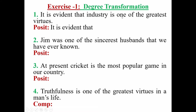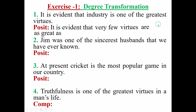Now we are going to transform: 'Industry is one of the greatest virtues.' Follow the rule of superlative to positive. If we find 'one of the,' we start our sentence with 'very few.' After 'very few,' write down the plural noun — the next part of the adjective — which is 'virtues.' Then use plural verb. The verb 'is' changes to 'are.' Then: as the positive form of 'greatest' is 'great,' write 'as great as,' then the given subject 'industry.'